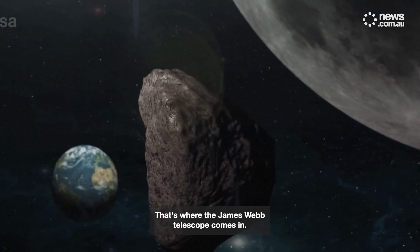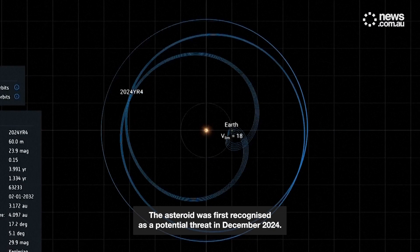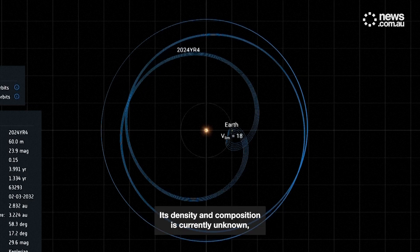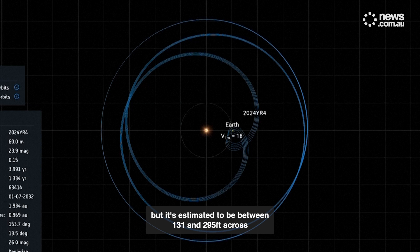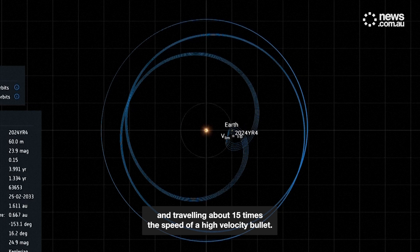That's where the James Webb Telescope comes in. The asteroid was first recognized as a potential threat in December 2024. Its density and composition is currently unknown, but it's estimated to be between 131 and 295 feet across, and traveling about 15 times the speed of a high-velocity bullet.